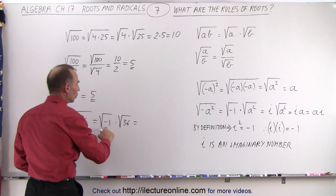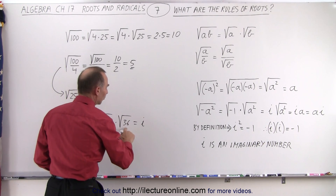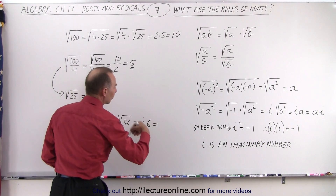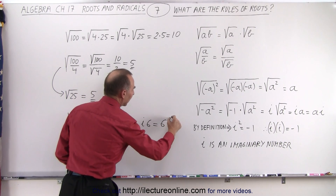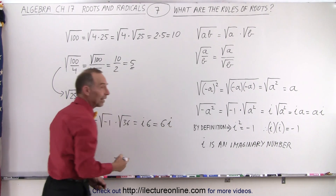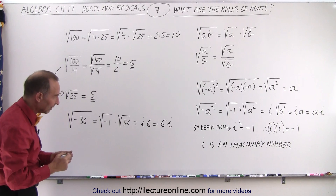That is equal to i times the square root of 36, which is 6. And preferably, we like to write it as 6i — we like to write the number first and then i second.